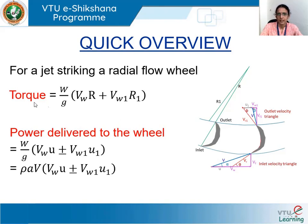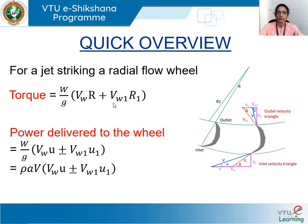In this case the torque generated is given by W/g — which is the mass flow rate — multiplied by (Vw·R + Vw1·R1), where R and R1 are the radii of the wheel at the inlet and the outlet respectively, and Vw and Vw1 are the tangential components of velocity at the inlet and the outlet respectively.